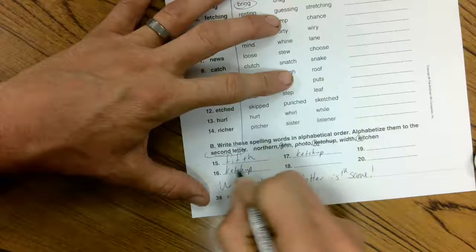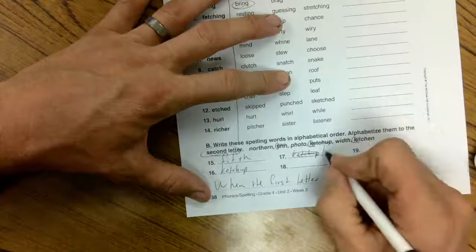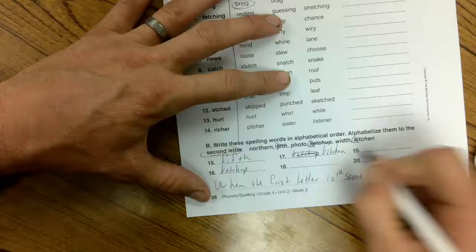Uh-oh. Yeah, I did it wrong. Sorry. Ketchup would be 16. And kitchen would be 17.